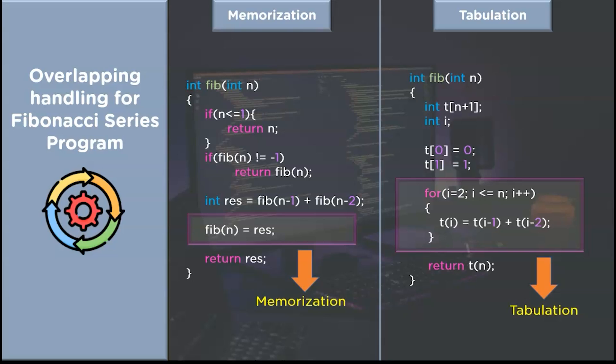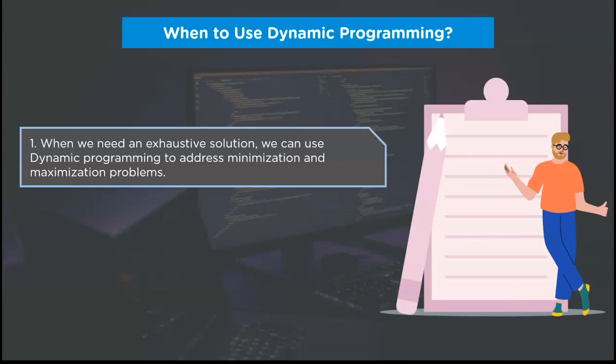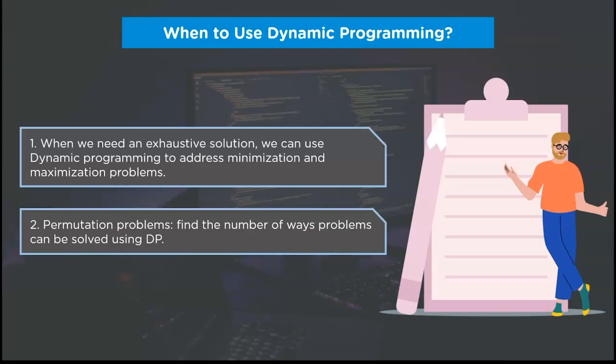Moving ahead, we'll discuss when to implement a dynamic programming solution for any given problem. You can solve any problem using dynamic programming which abides by the properties of dynamic programming. Most frequently, you will come across minimization and maximization problems which are readily recursive in nature — if you need an exhaustive solution for these problems, you can solve them using the dynamic programming paradigm. The permutation and combination problems can also be solved using dynamic programming. Problem statements beginning with 'find the number of ways' are famous permutation problems solvable using the dynamic programming approach.